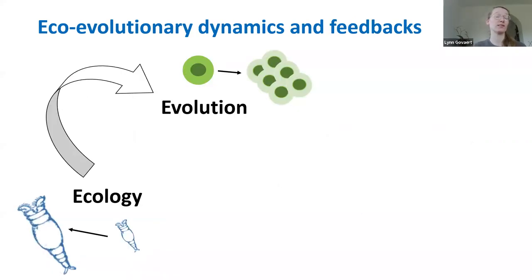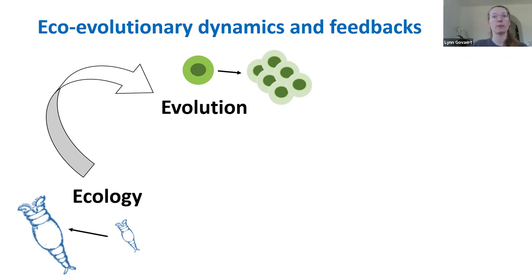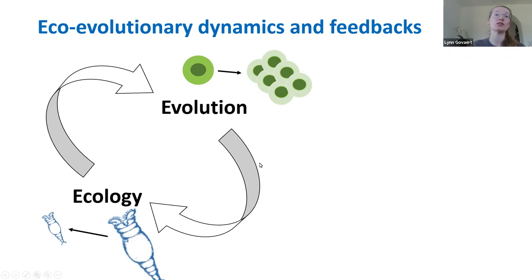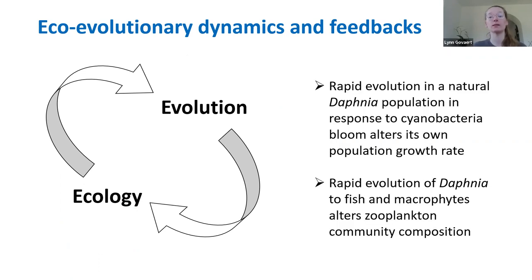This is a very nice example of eco-evolutionary dynamics and feedbacks, in which a change in ecological properties feeds back into an evolutionary change — here a shift from the undefended to the defended prey population — and these evolutionary changes then feed back on altering the ecology. Since then, many examples show how rapid evolution can alter ecological processes both in natural systems and more complex experimental settings.